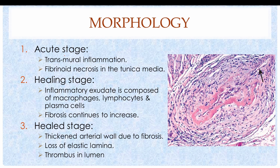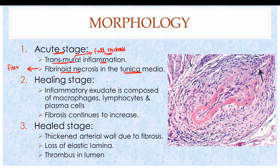The histological picture is subdivided into three phases. The first is the acute stage, in which there is transmural inflammation of the vessel wall — meaning full thickness involvement — with multiple inflammatory cells such as neutrophils, eosinophils, and mononuclear cells. Inflammation is accompanied by fibrinoid necrosis of the tunica media, which is small and limited in the acute stage. Fibrinoid necrosis refers to necrosis of medial cells resulting in fibrosis, and is most commonly associated with immune-mediated diseases.